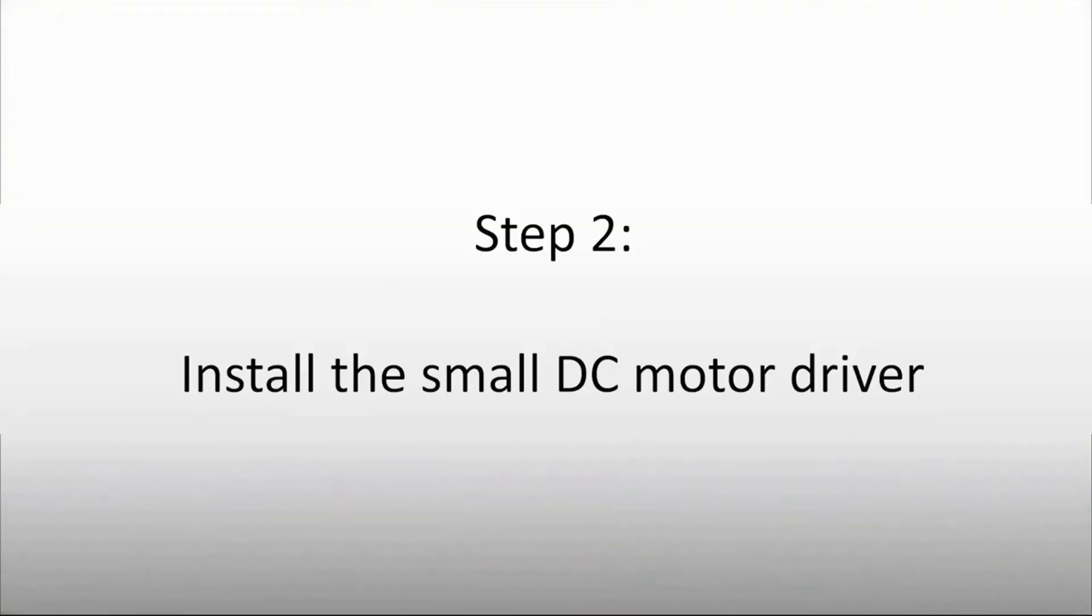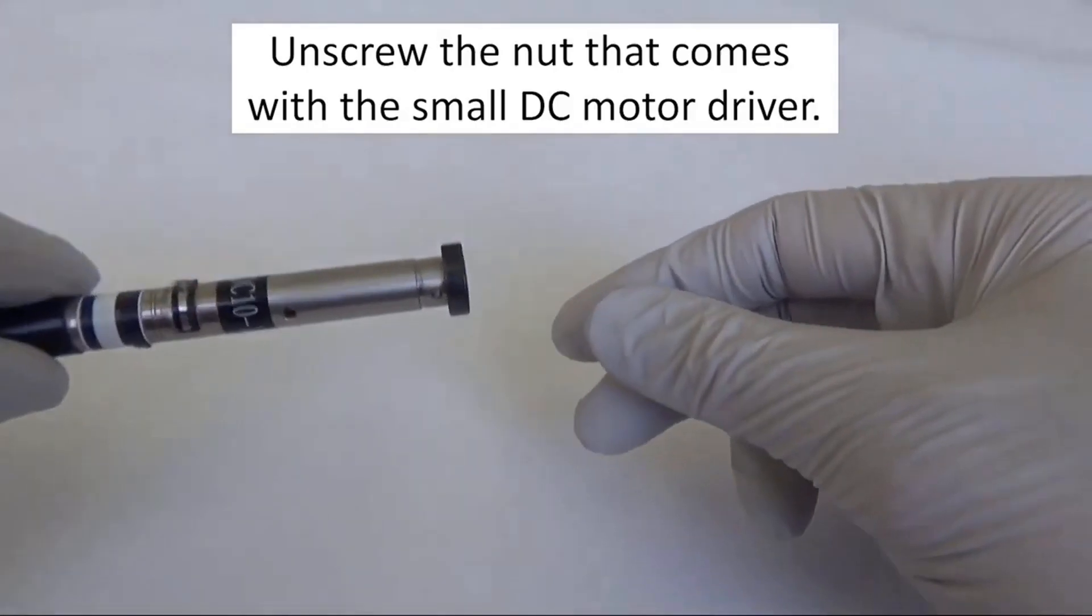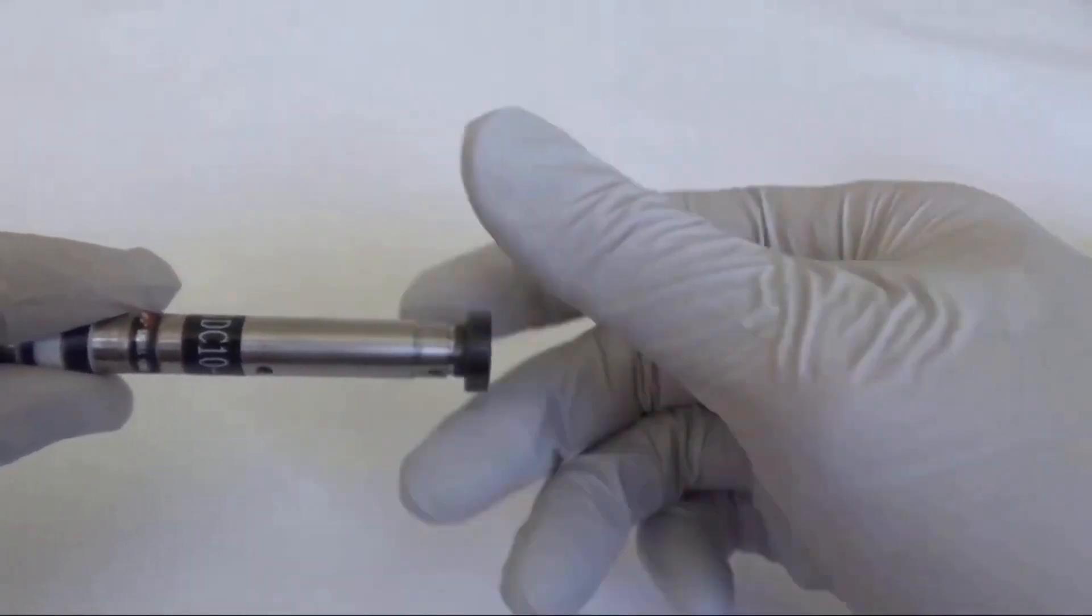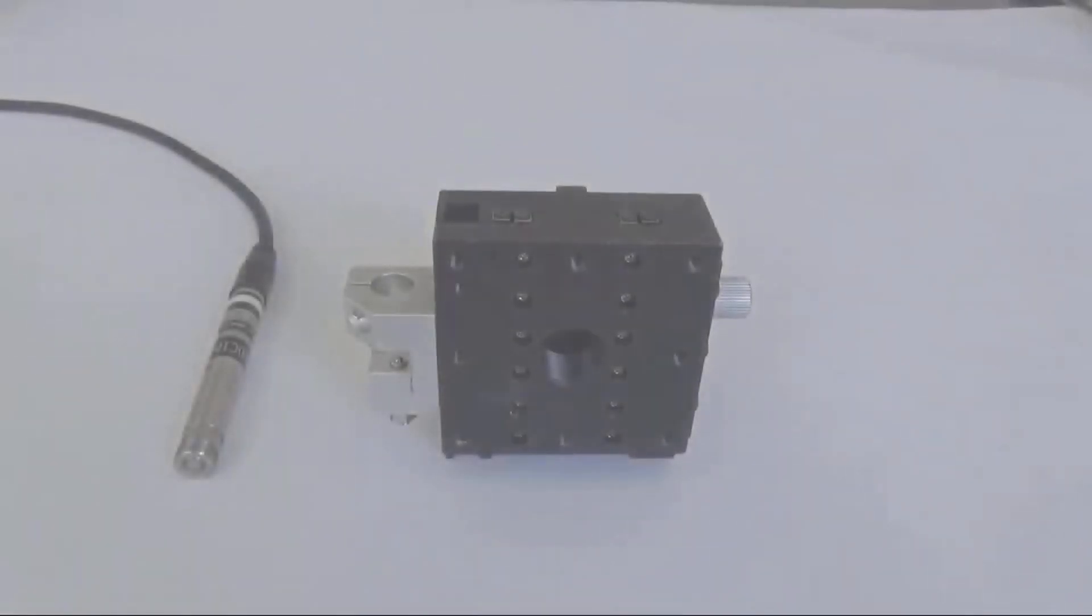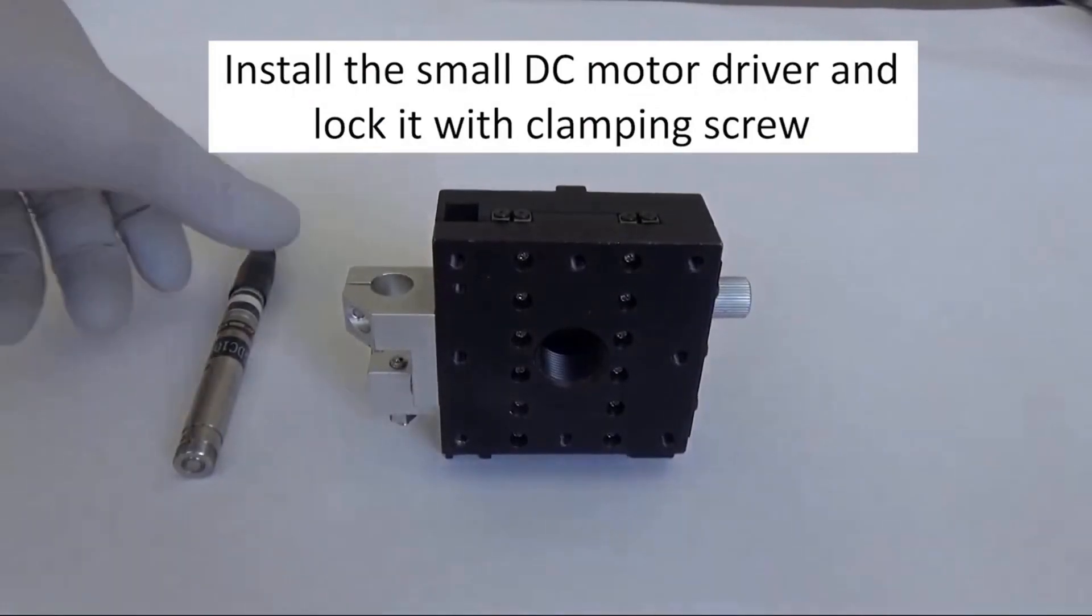Step two: Now we will install the small DC motor driver. Unscrew the nut that comes with the motor driver, then install the motor driver and secure it with the fastening screws.